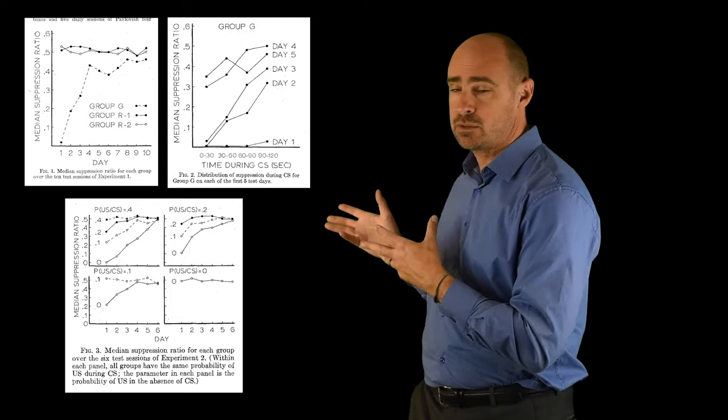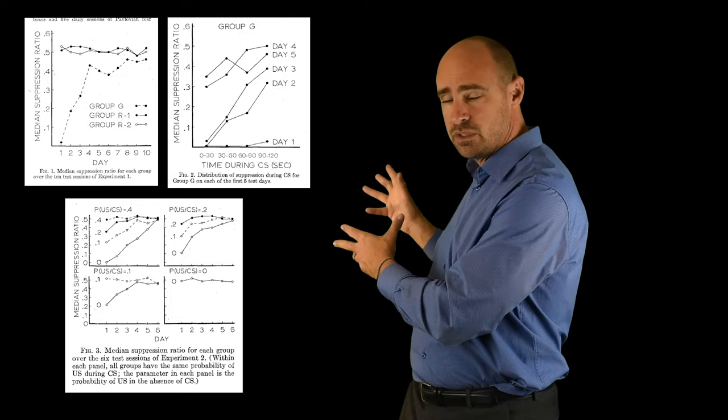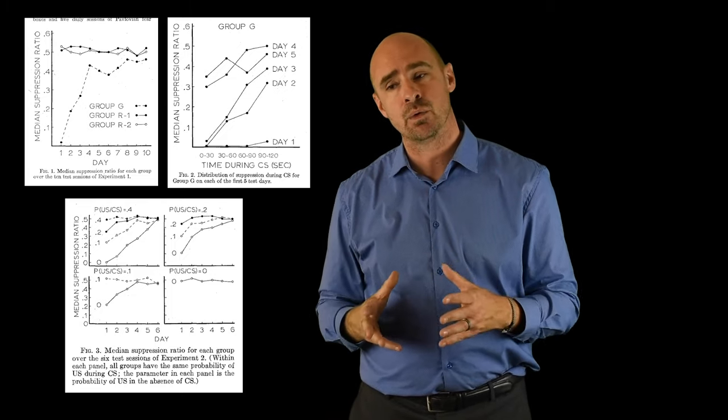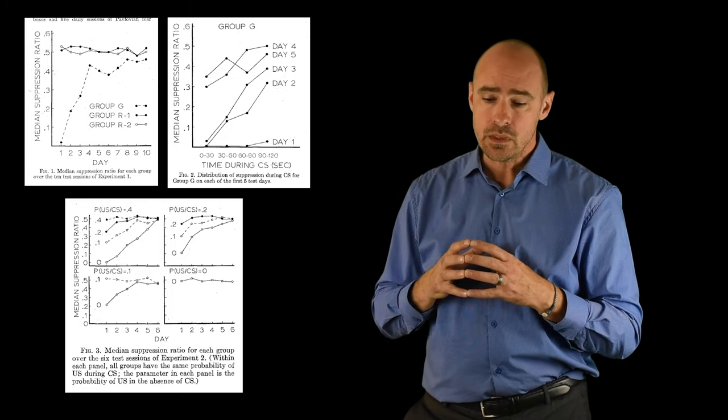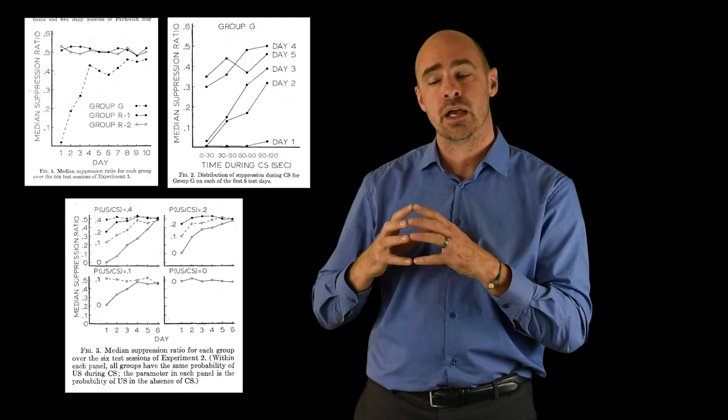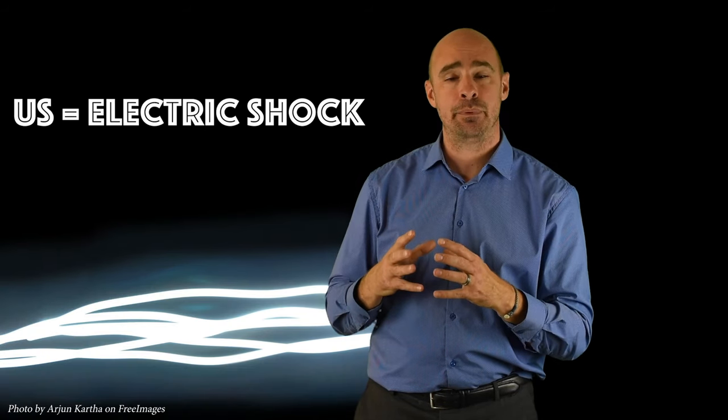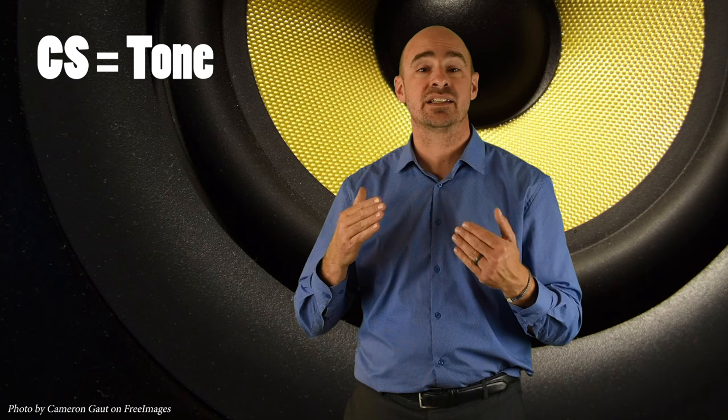We'll take a look at some of the experiments as we go along and put them up here and show you some of the details. But in general, here's what we're talking about. So the basic experiments talk about varying the probability between the US happening in the presence of the CS. So the US is the unconditioned stimulus. That's the thing that produces the reflex. And the CS is the learned stimulus, the stimulus that now elicits a conditioned response.